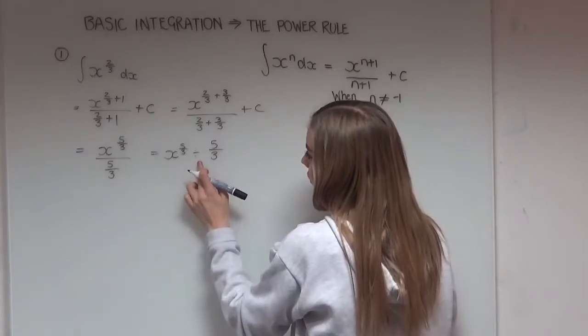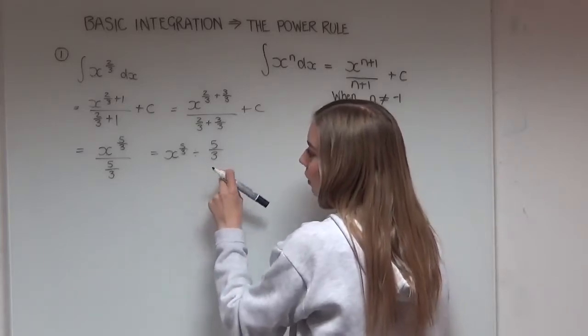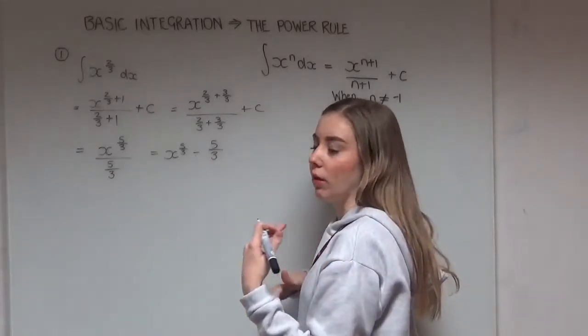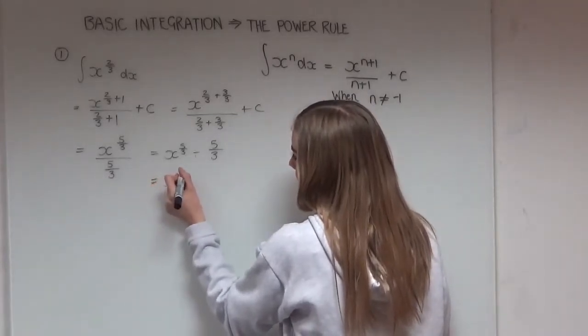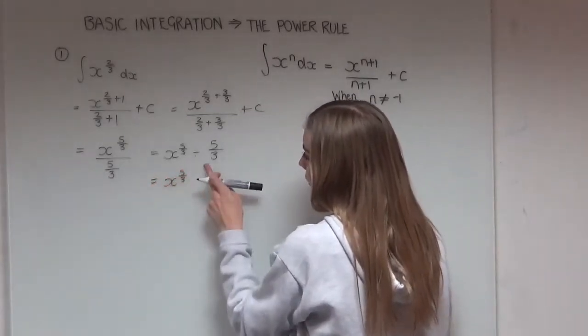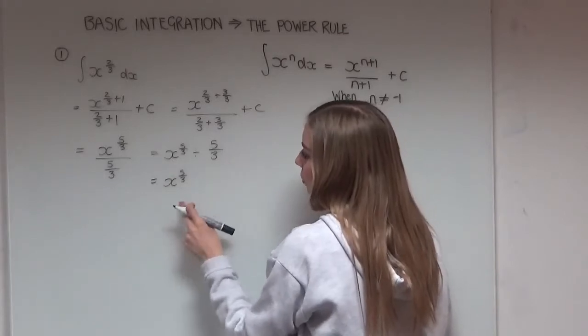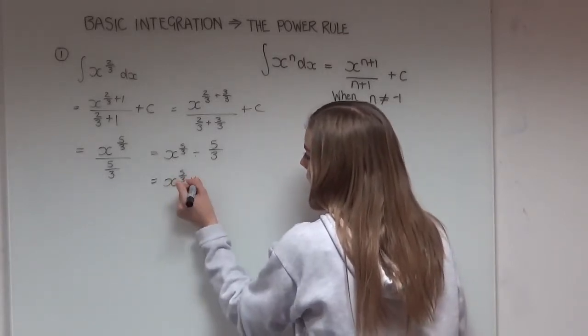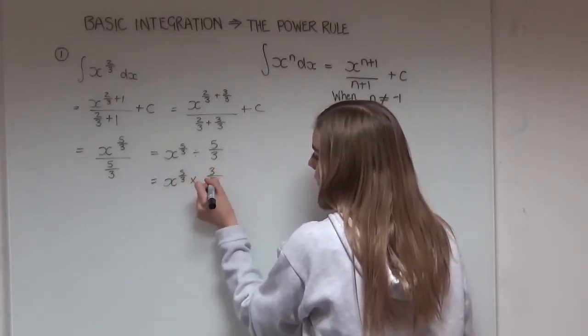And we know that when you're dividing by a fraction it's the same as multiplying by the reciprocal of that fraction. So x to the power of 5 over 3 divided by 5 over 3 becomes x to the power of 5 over 3 times by 3 fifths.